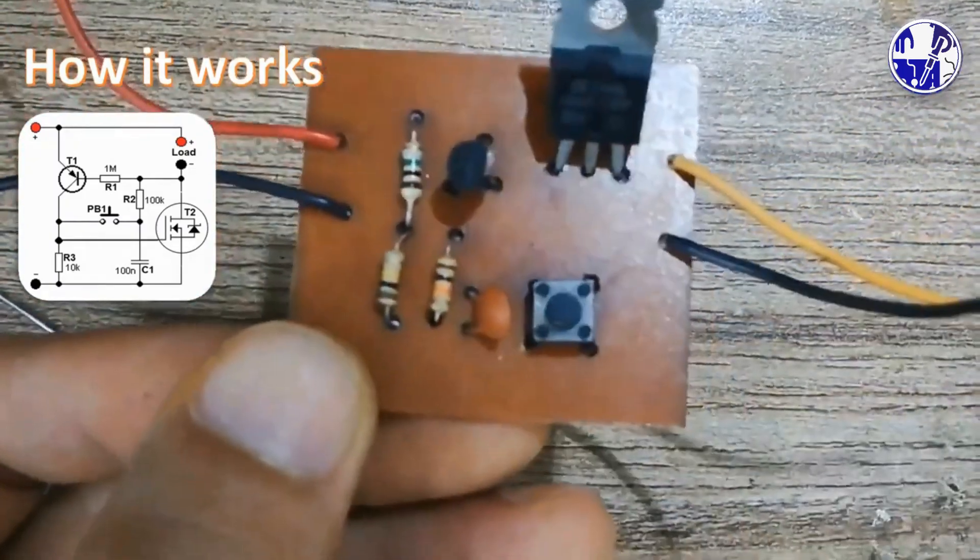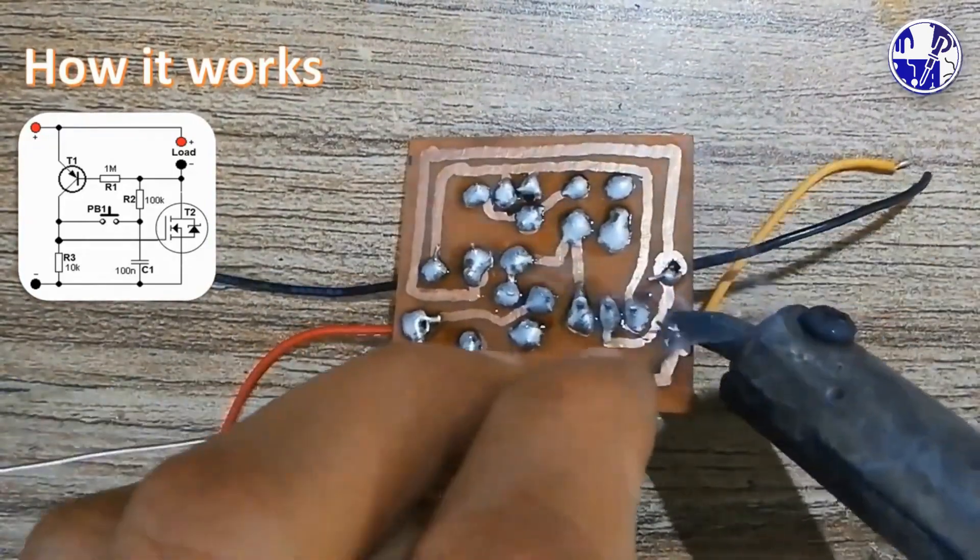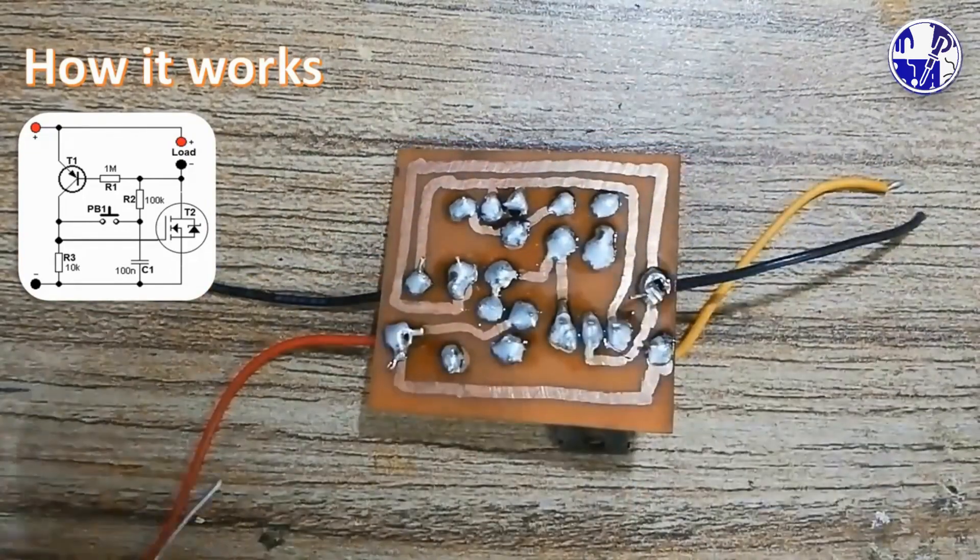Simultaneously, transistor T1 opens through resistor R1, maintaining a positive voltage on its gate. Capacitor C1 discharges through resistor R2 and transistor T1.